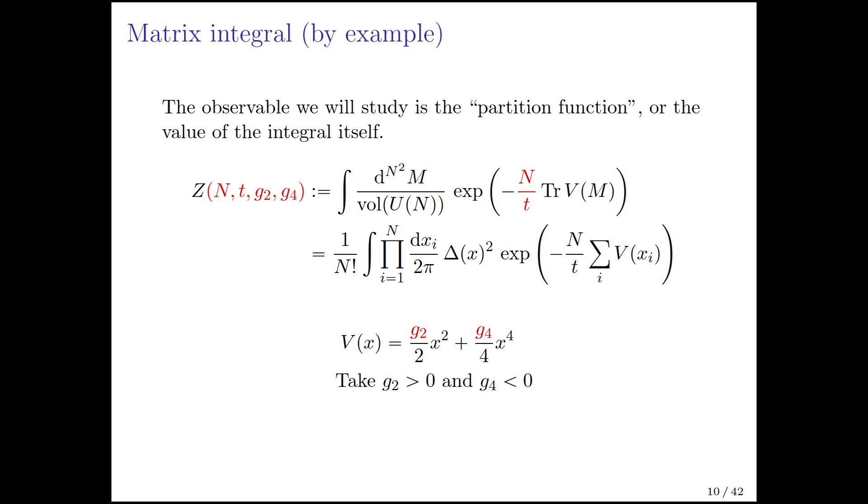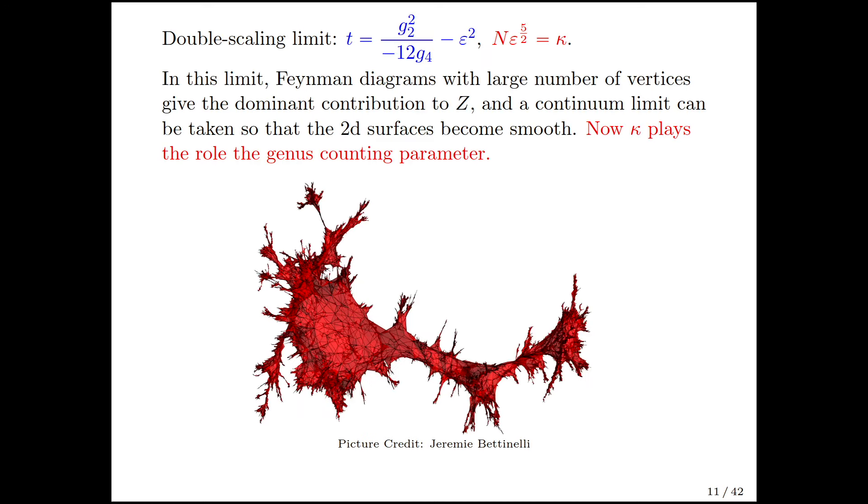Now I will introduce the two sides of this duality. The matrix integral side is easier to describe. We're computing the partition function, an integral over one n by n matrix. N is big, t is the Tuft coupling, and you have some potential with a quadratic and quartic term. We take a particular limit: you tune t to a value where epsilon is small, and take n to infinity, keeping kappa fixed. In this limit, the Feynman diagrams that contribute are very big, so at a given genus order, the number of vertices is large. Then you can take a continuum limit on the string worldsheet, and kappa starts to play the role of a genus counting parameter.